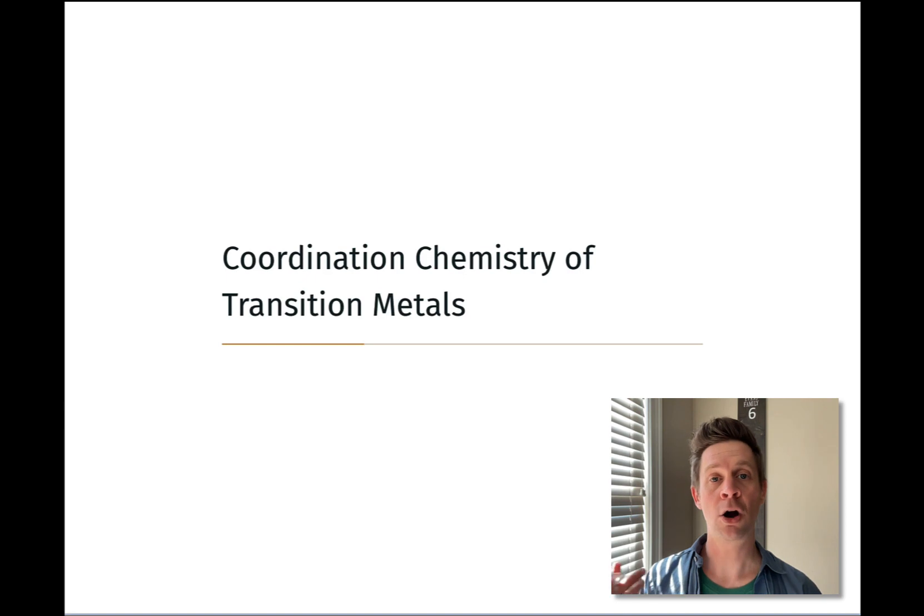Transition metal cations are great Lewis acids. They are the zero electron partner in the coordinate covalent bond. On the other hand, nonmetals like nitrogen, oxygen, and halogens that have lone pairs are good Lewis bases. And when you put these together, you get coordinate covalent bonds. The nonmetal is the two electron partner in the bond.